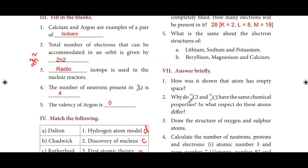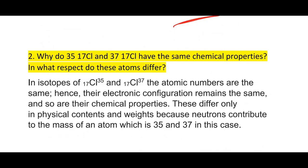Second: Why do chlorine isotopes have the same chemical properties? In what respect do these atoms differ? In isotopes of chlorine, the atomic numbers are the same; hence their electronic configuration remains the same, and so do their chemical properties. They differ only in physical contents and mass, because neutrons contribute to the mass of an atom — which is 35 and 37 in this case.